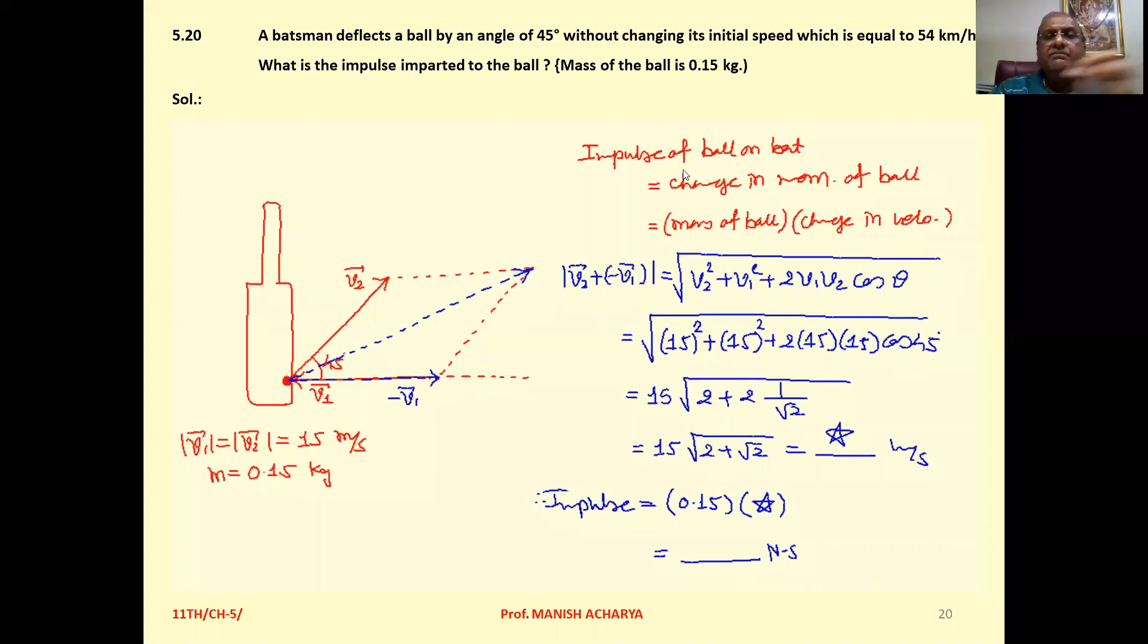So impulse of ball on bat that is changing momentum of the ball. So changing momentum that is mass of ball into changing velocity.